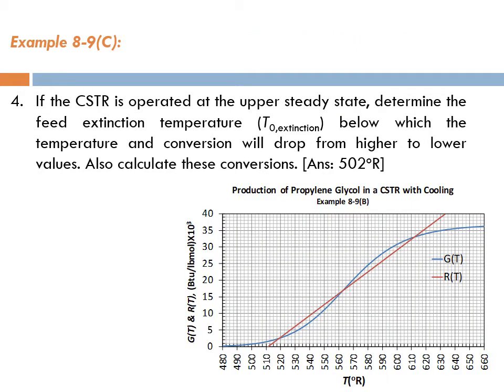We solved three requirements before. Now this is requirement number 4. It says: if the CSTR is operated at the upper steady state, determine the feed extinction temperature T0 extinction, below which the temperature and conversion will drop from higher to lower values. Also calculate the conversions before and after.